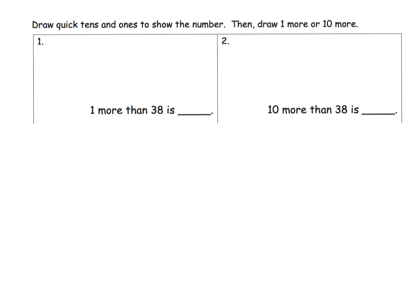We're going to put that to practice using our quick tens and ones to show a number. It says one more than thirty-eight. The first thing we're going to do is represent what thirty-eight looks like. Thirty-eight is going to look like this: one, two, three — there's our thirty — and then eight ones: one, two, three, four, five, six, seven, eight. There's my thirty-eight.